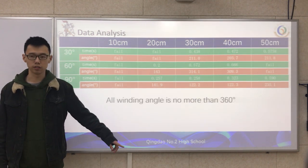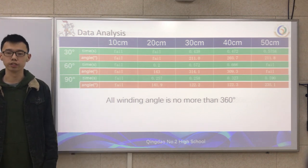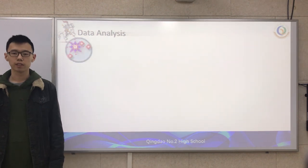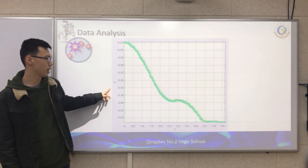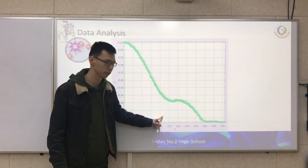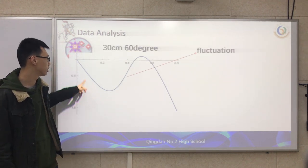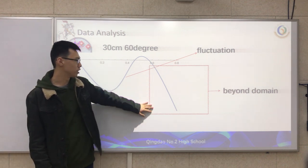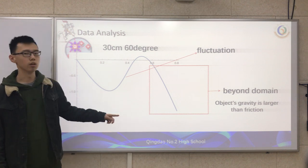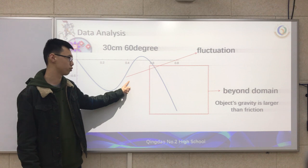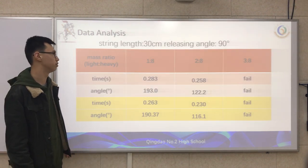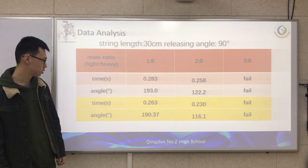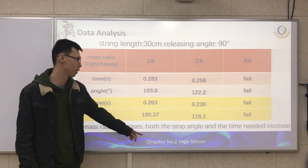We also find that all winding angles are less than 360 degrees, because according to the equation, friction increases exponentially as the winding angle increases. We explored data from Tracker and found the heavy object does not move down monotonically — it fluctuates at a certain point. Data from Mathematica also shows that sometimes the velocity is positive, confirming the fluctuation of the heavy object. Part of the data is beyond the domain, where the object's gravity is larger than the friction, which violates the premise of our equation. We also changed the mass ratio of light to heavy objects from 1 to 3, and found that as the mass ratio increases, both stop angle and time needed increase.